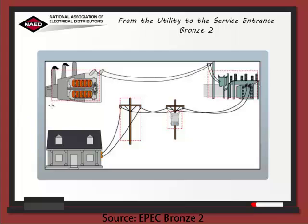Over here is the generator. The voltage leaving the power station is stepped up by huge power transformers located in a utility switch yard, and it's carried over high tension lines at voltages of 25,000 and up. Over here is the substation, where the power is stepped down at the utility substation for transmission and distribution within a community.